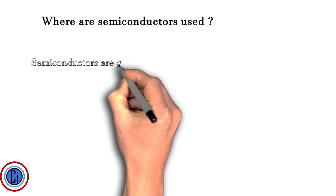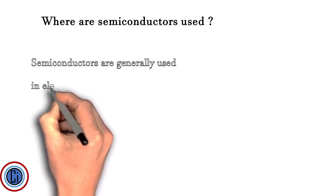Where are semiconductors used? Semiconductors are generally used in electronic devices such as radio, television, IC, VCR, etc.